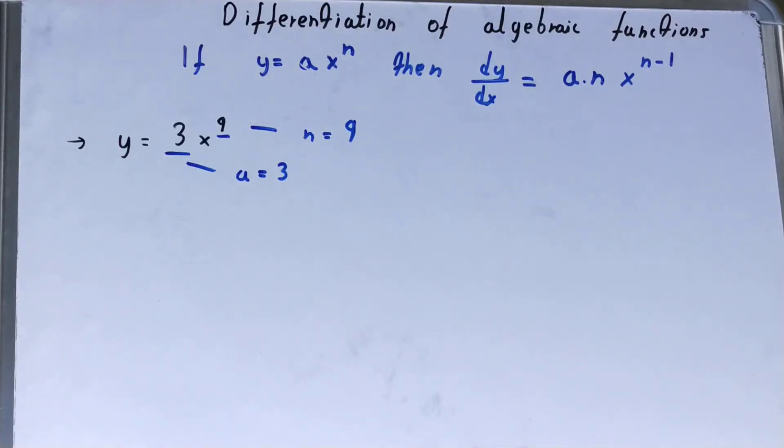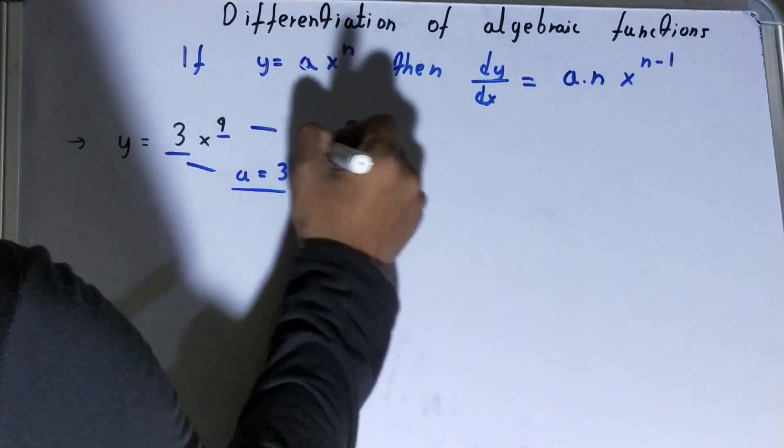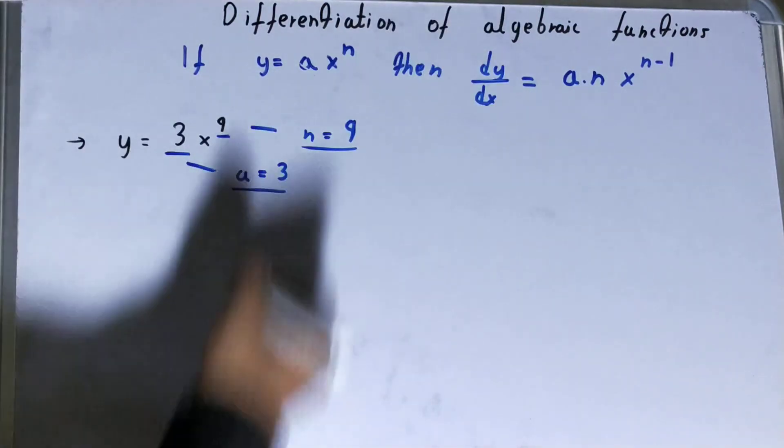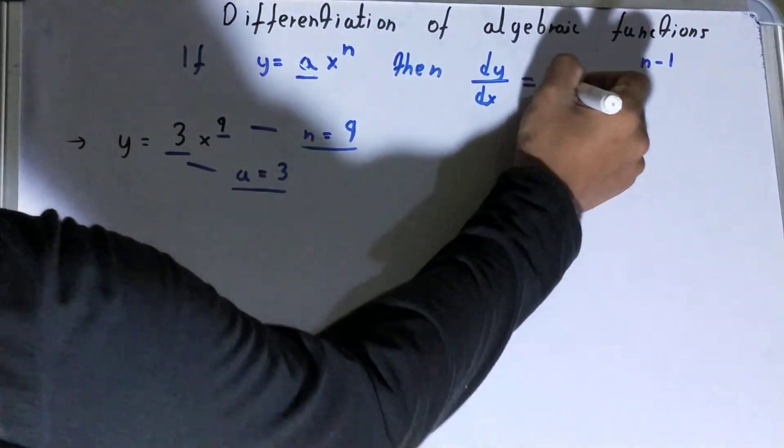You should be very clear with the concept to avoid any mistakes. Once you know what is your a and what is your n, you can directly write it. For a, we will write it like this. So first let me write dy/dx.